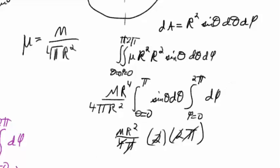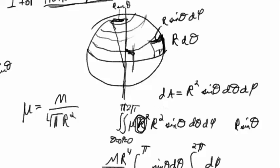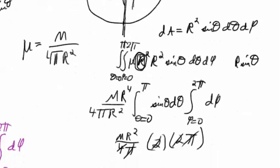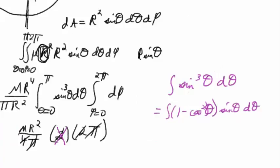Something went wrong — I know what it was. This R in the integrand should not have been a capital R; it should have been r sine theta, because we want the distance from the axis of the sphere, not just the radius. So there should be a sine cubed theta in the integrand, which means the theta integral is not simply 2.